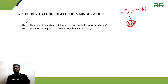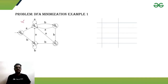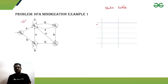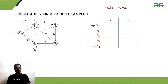After that, we draw the state diagram and state table, and finally apply the equivalency method. Here is our given example DFA with five states and two inputs, a and b. Our first task is to make the state table. There are five states: q0, q1, q2, q3, and q4, where q0 is the initial state and q4 is the final state.